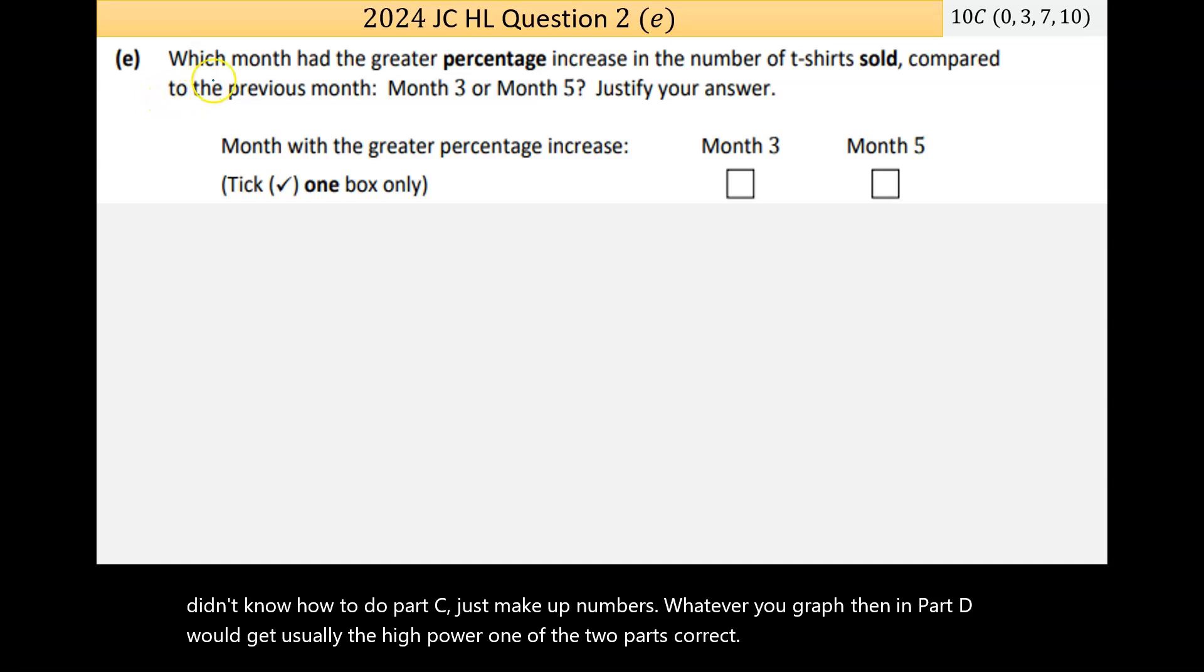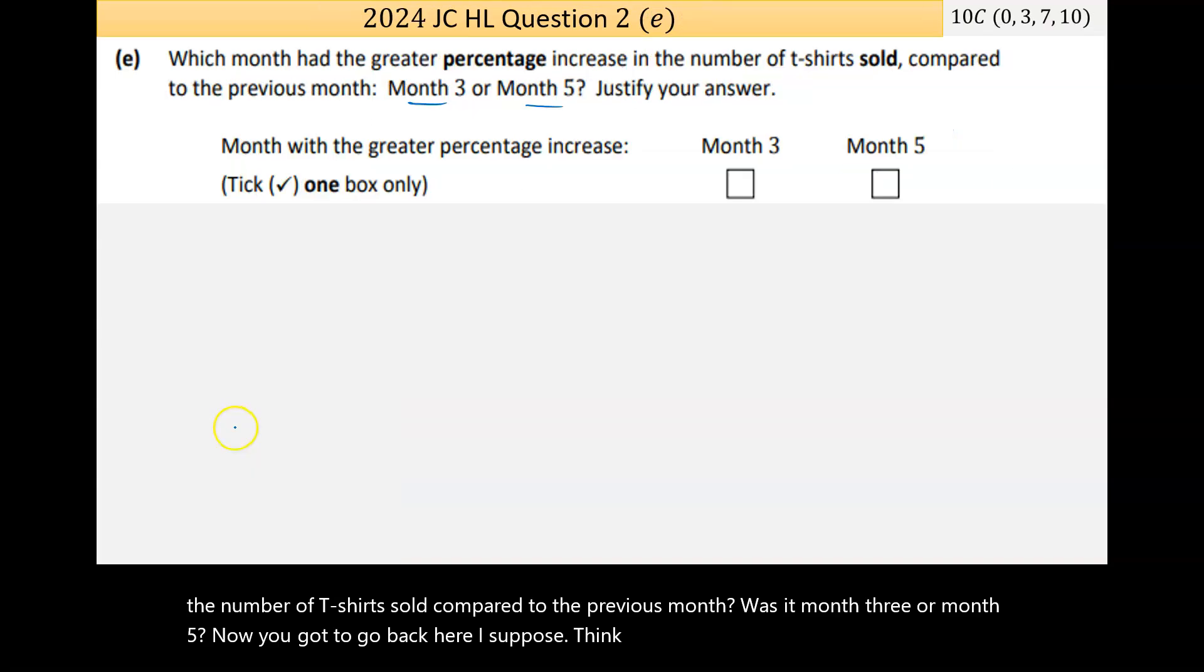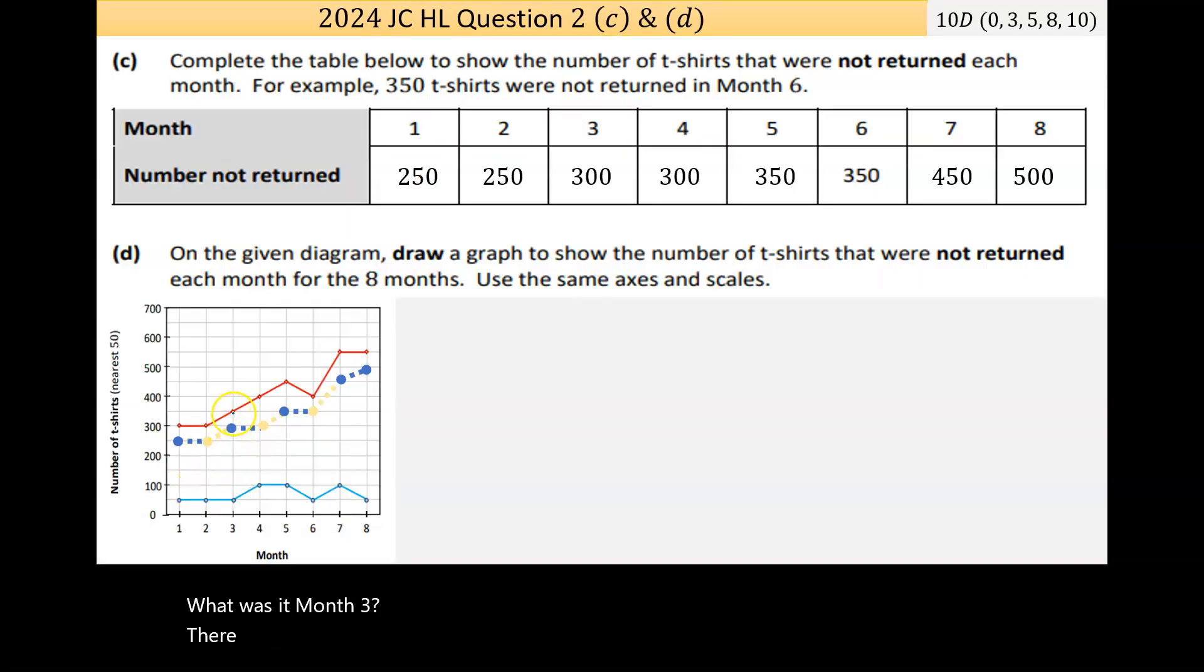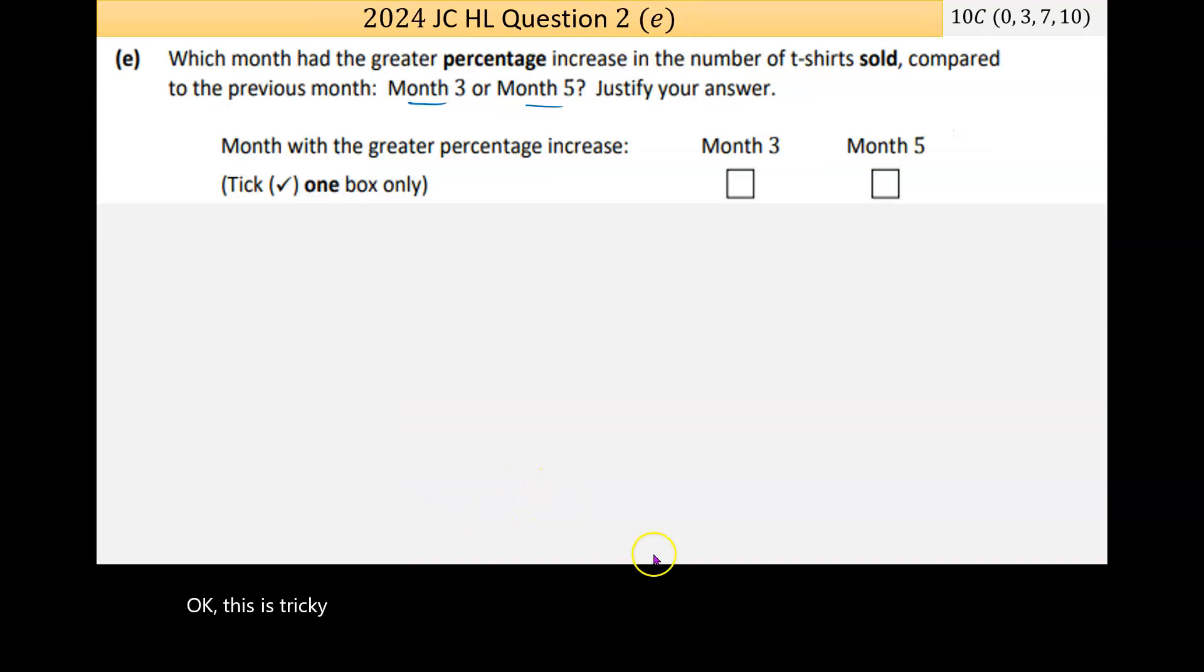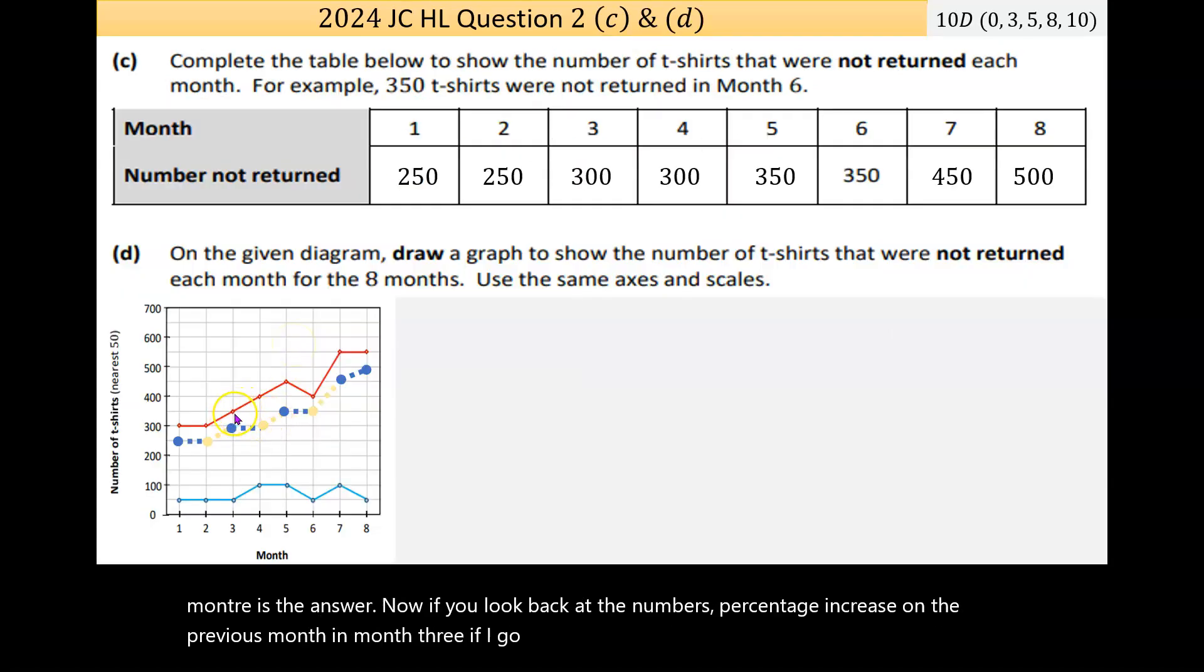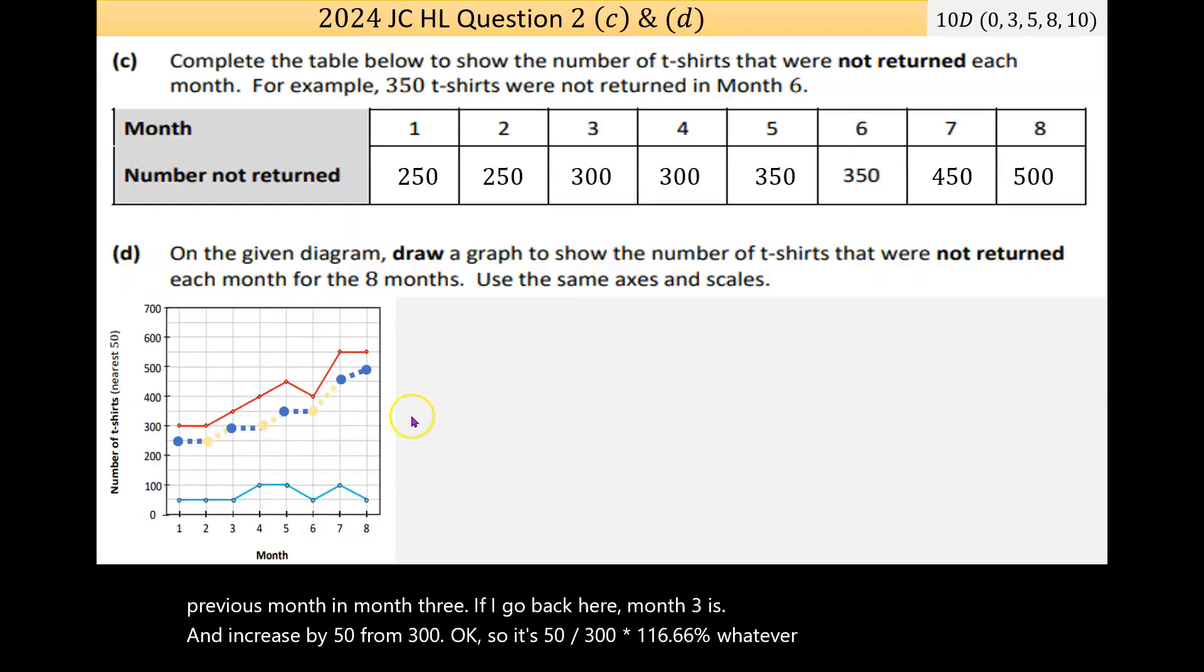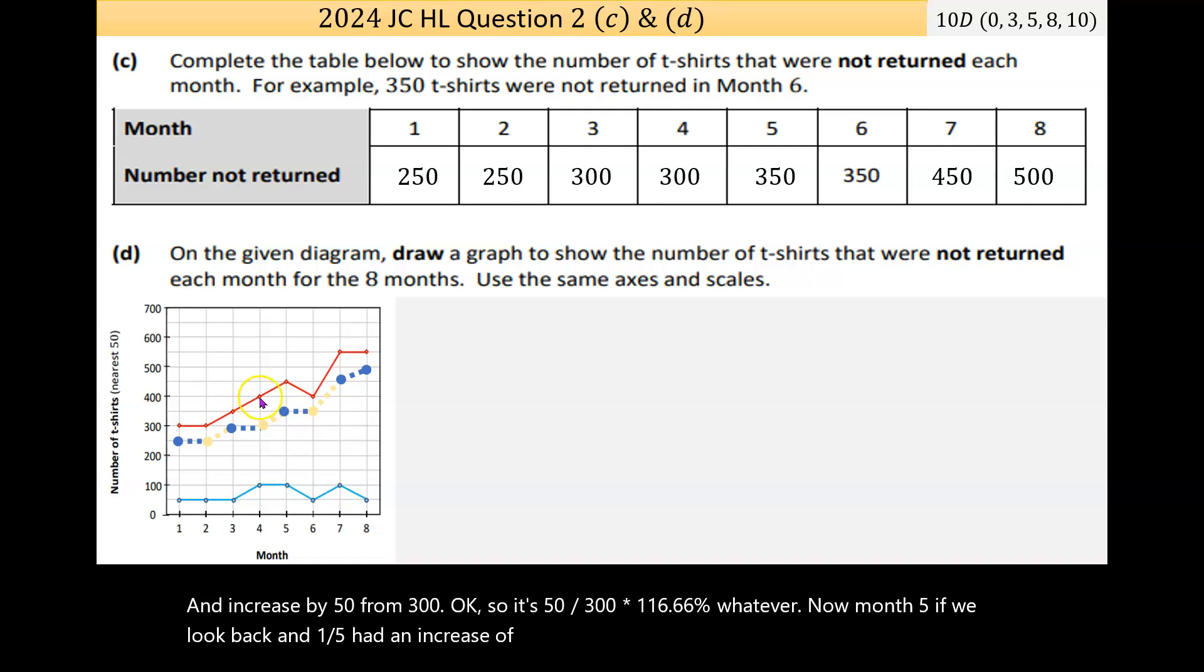The last part E is a 10 marker. Which month had the greater percentage increase in the number of t-shirts sold compared to the previous month, month 3 or month 5? Month 3 is the answer. The percentage increase in month 3, if I go back here, is an increase by 50 from 300. So it's 50 over 300 times 100, which is 16.66 percent. Month 5 had an increase of 50 but from a starting point of 400, and because the numbers are slightly bigger on the bottom, you end up with 12 and a half percent.